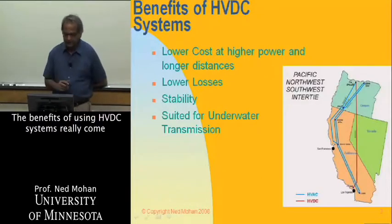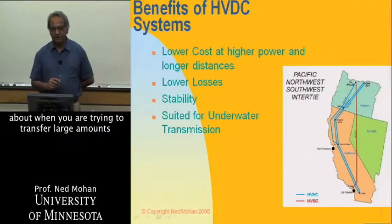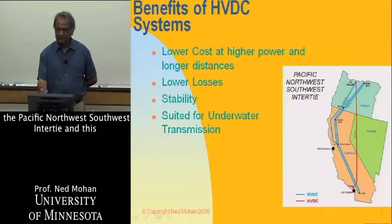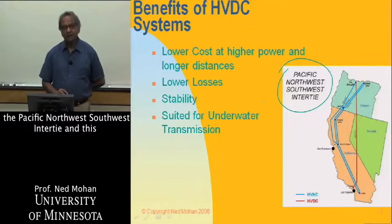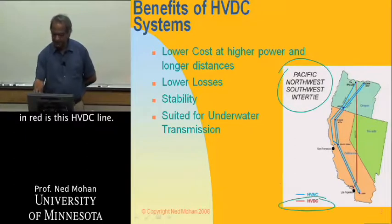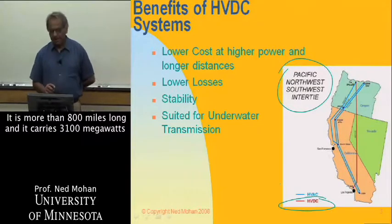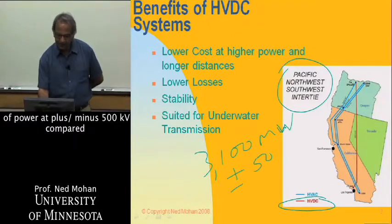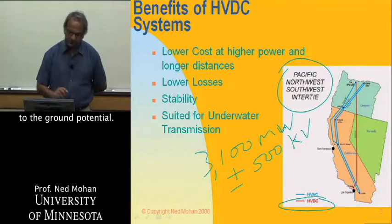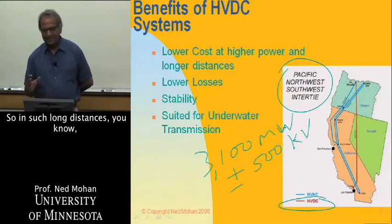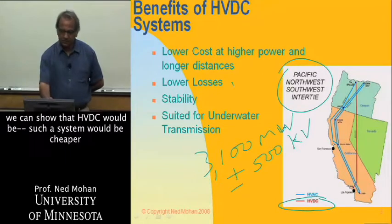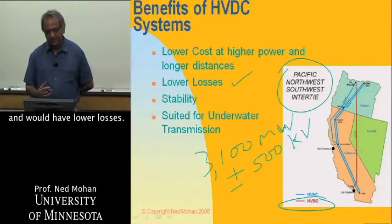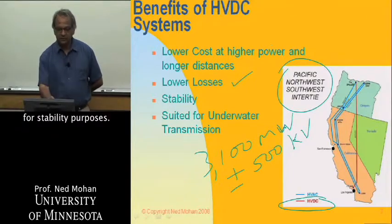The benefits of using HVDC systems really come about when we're trying to transfer large amounts of power over long distances. As you see in this example — the Pacific Northwest-Southwest intertie — this HVDC line is more than 800 miles long and carries 3,100 megawatt of power at plus-minus 500 kV compared to ground potential. In such long distances, we can show that HVDC would be cheaper and would have lower losses. Another reason for using HVDC systems is for stability purposes.